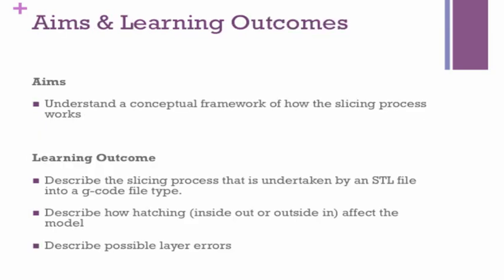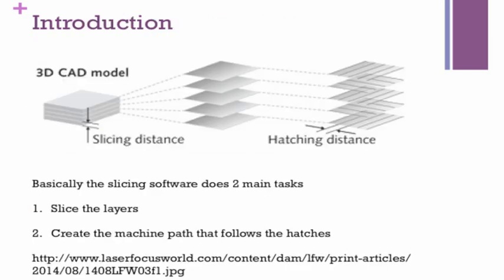Moving on to the aims and learning outcomes: the aim is to understand the framework of how the slicing process works. The learning outcomes are: being able to describe the slicing process from STL file to G-code, describe how hatching direction (inside-out vs. outside-in) affects the model, and describe possible layer errors.